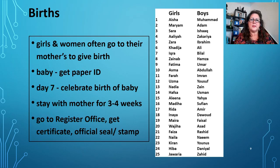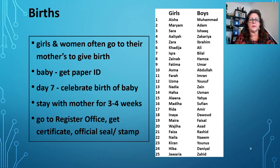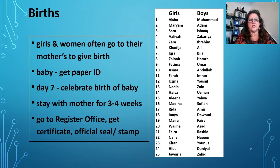Let's now talk about births in Egypt. Girls and women often go to their mothers to give birth, because your mother, sisters and aunties will be there to help you prepare. After the baby is born, the baby gets some paper ID, and on day 7 people come to celebrate the birth. Lots of relatives and neighbours will come with gifts. The new mum would stay with her mother for about three to four weeks. After this, she would go to the register office and get a certificate and an official seal or stamp.